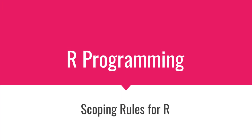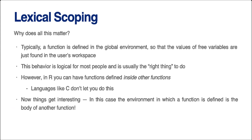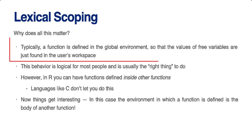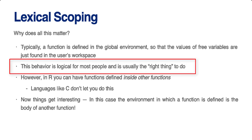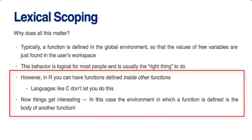Hello and welcome to the next lecture. In the last lecture, we started scoping rules in R programming. In this lecture, we will continue talking about these rules. So why exactly does all this matter? It's not immediately clear. Typically, a function is defined in the global environment so that values of the free variables are just found in the user's workspace. If a value can't be found inside the function itself, you just look in the global environment. This allows you to define global variables that will be common to many different functions you might define in your workspace.